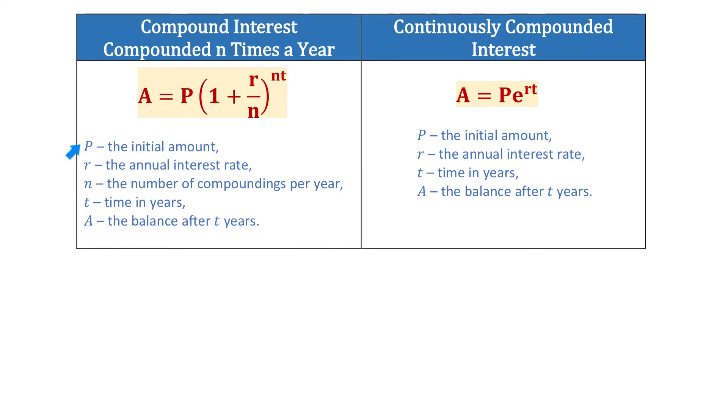P represents the initial amount, r represents the annual interest rate, n is the number of compoundings per year, t is time in years, and A is the balance after t years.